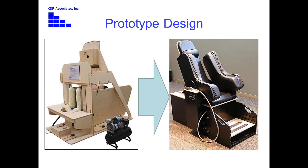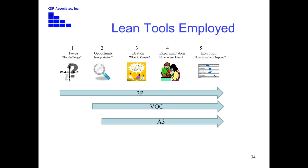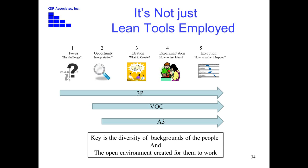The prototype came from about five days of work total — two days of voice of the customer, three days of the 3P event. As for tools used, we really didn't use a whole lot: we used 3P, voice of the customer, and the A3 throughout. But what we have to recognize is it's not just the tools — the key was the diversity of backgrounds among the people and creating an open environment where they could work and have that interchange of ideas. That's where good ideas come from.